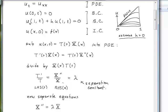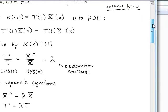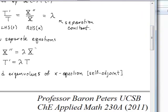This is the idea behind the separation constant: we can separate the t and x dependencies, requiring each part to be constant. From this we extract two ordinary differential equations — one involving only x, one involving only t. We begin by finding eigenvalues of the X equation, since the second derivative operator is self-adjoint.